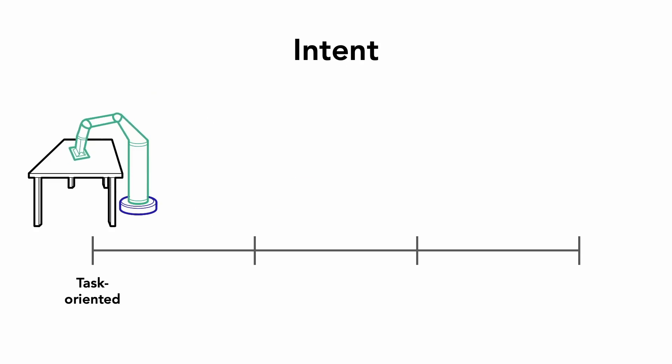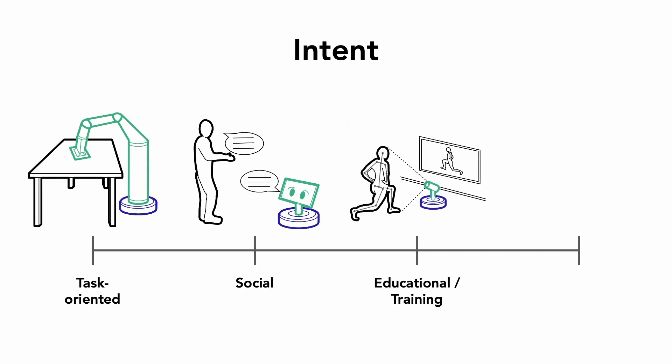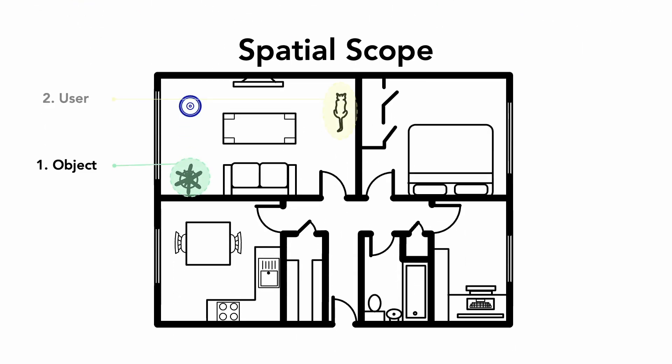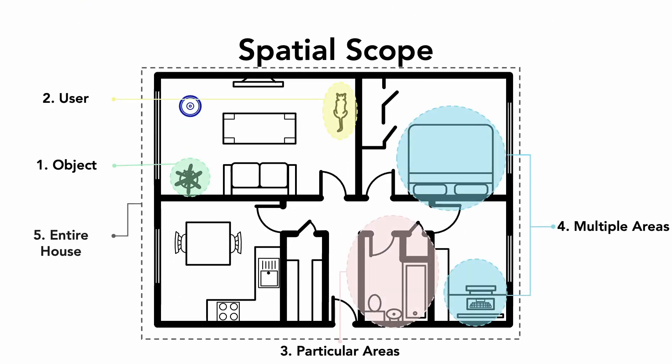In the intent dimension, we illustrate purposeful interactions, like wiping a tabletop post-meal or providing information during a conversation. The spatial scope dimension examines operational contexts, such as conducting security patrols throughout the home.